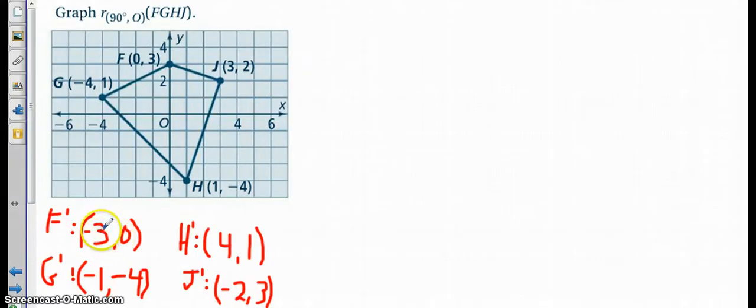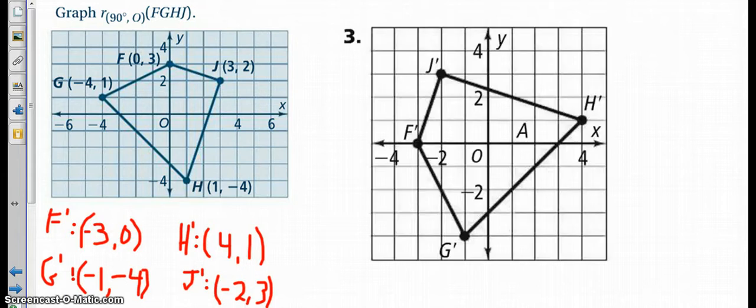When I think about all of my prime points, I flip the order of the X and the Y, and then I make my first one the opposite of what it was. So here for F, I now end up with negative three, zero. For G, I end up with negative one, negative four. Here I flip them, my negative four becomes positive. Here I flip them, my two becomes negative. Go ahead, put that on the coordinate grid. When I put all those on the coordinate plane, my shape should look like this.